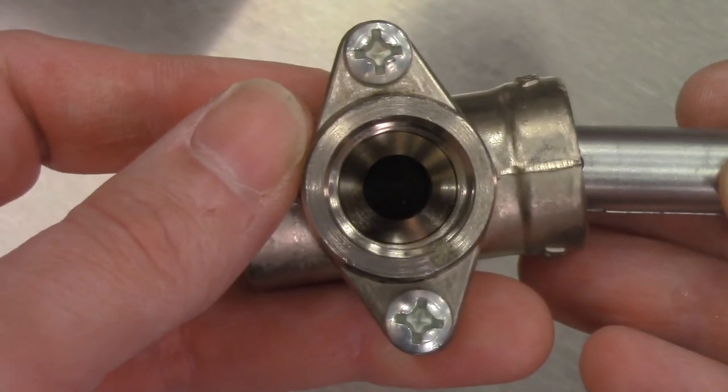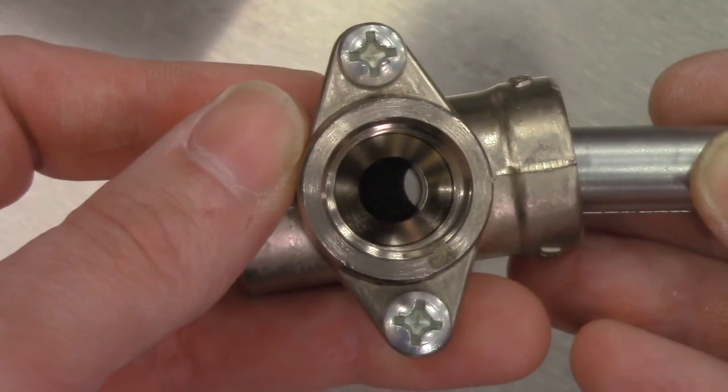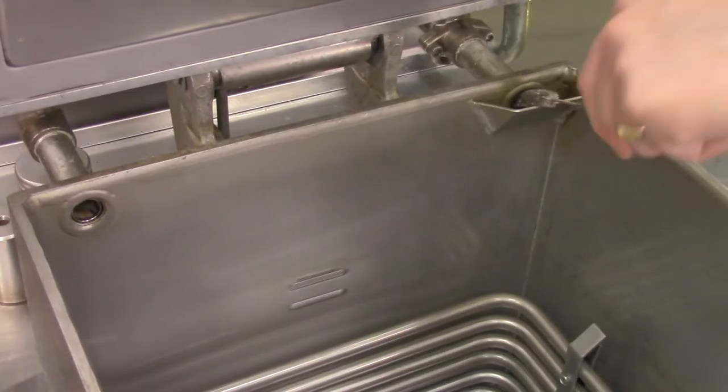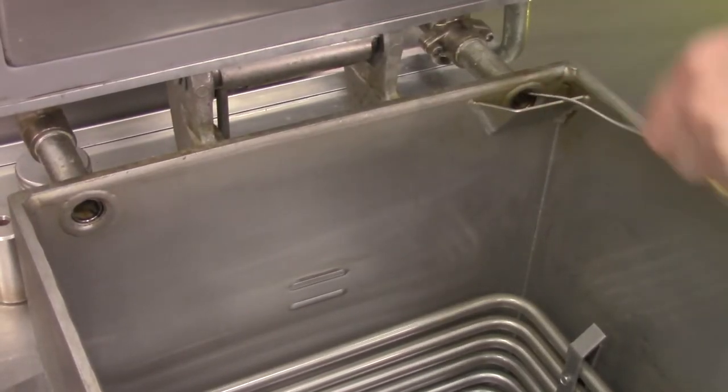When pressure is slow to release at the end of a cook cycle, this is a sign that either the solenoid valve is not opening, is slow to open, or pressure solenoid plumbing is obstructed between the fry vat and the steam exhaust stack.